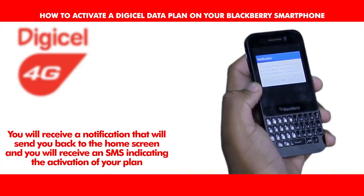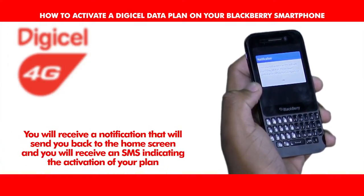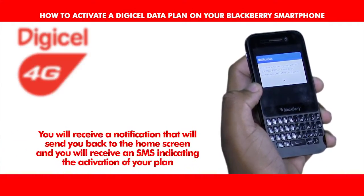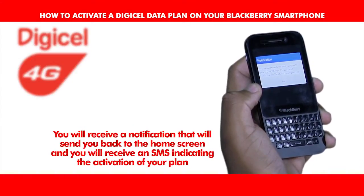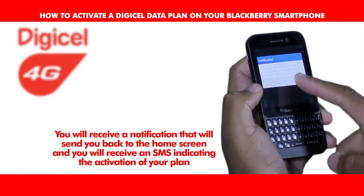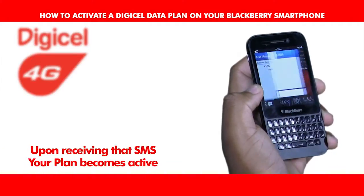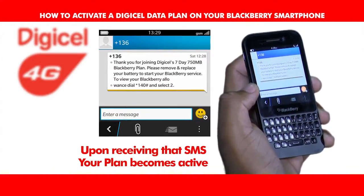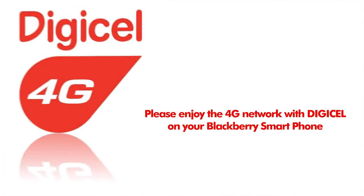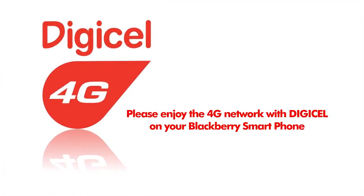You can then confirm this purchase by pressing one. You will receive a notification that will send you back to the home screen, and you will receive an SMS indicating the activation of your plan. Upon receiving that SMS, your service becomes active. Please enjoy the 4G network with DigiCell on your BlackBerry smartphone.